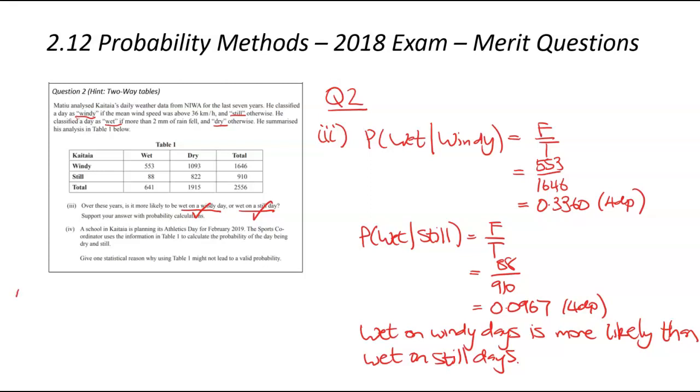We're now looking at IV. And this is a bit of a wordy question. So a school in Kaitaia is planning an athletic state in February 2019. The sports coordinator uses the information in Table 1 to calculate the probability of the day being dry and still. So they found the probability of dry and still. So dry and still would be that 882 out of that number there. We're not asked to calculate it, but just checking out on the numbers. Give one statistical reason why using Table 1 might not be a valid probability. So we're not asked to calculate something. We've been asked for a reason or an explanation. This is a bit of a wordy question. And when I was looking through this, there's one obvious answer. So if we go back to the initial context, you know, this is an average based on the last seven years.